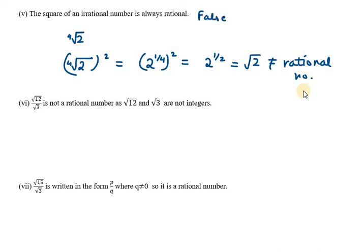Part 6: under root 12 over under root 3 is not a rational number. Let's check — we can write under root 12 as under root 4 into under root 3. Now under root 3 and under root 3 cancel. We are left with under root 4, which equals 2. And 2 is a rational number. So the statement is false — it actually is a rational number. This is true.